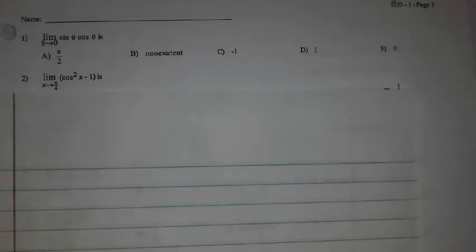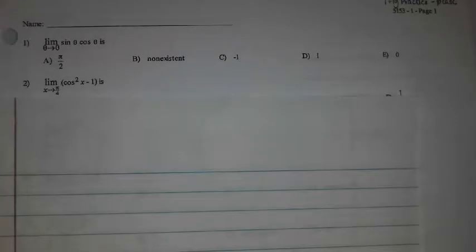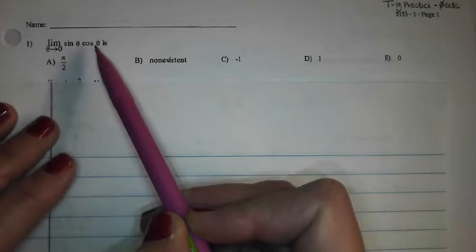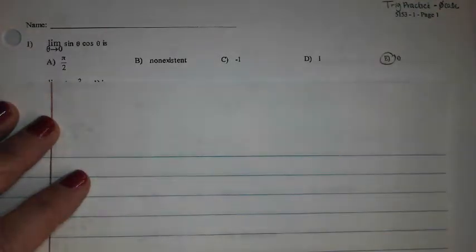So, the first one, direct evaluation, honestly, is going to work, right? You plug in zero, and you're going to get zero times one, which is zero. So, no need to manipulate if when you plug in, you immediately get an answer.